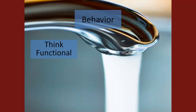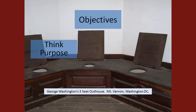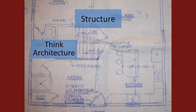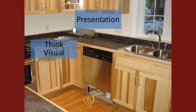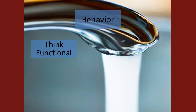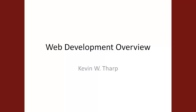That brings us full circle. The first thing we talk about is objectives, where we think about the purpose of the site — that comes at the very beginning. Then we talk about structure; once we understand the objectives, we start creating the structure. Then we've got the presentation, the content, and the behavior, which all plug into that structure once it has been built. Putting those together and understanding how they all tie in is the first step to understanding how to do website development. That concludes this particular segment.